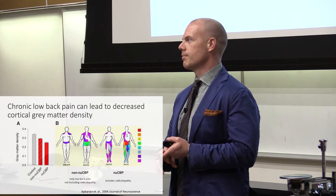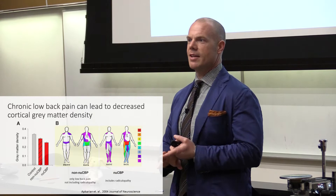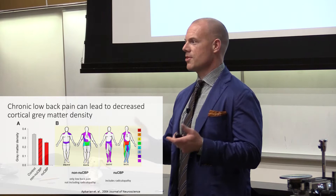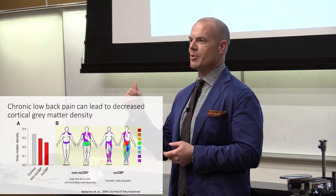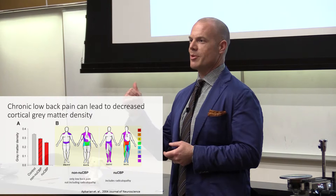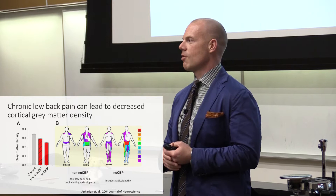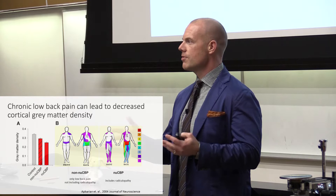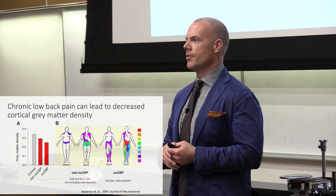The idea of bending over to pick something up off the floor terrifies someone because it could make their back go crazy. They may say, 'I'm scared to move, and I'm depressed.' And that could lead a clinician to conclude this person is crazy — there's nothing wrong with them. I don't know that this was Akarian's actual motivation, but it was widely appreciated in the field, especially among people interested in chronic pain and neuroplasticity, that it's difficult to explain all these comorbidities unless you start thinking about how pain impacts the brain a little bit differently.